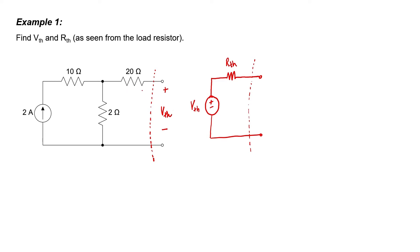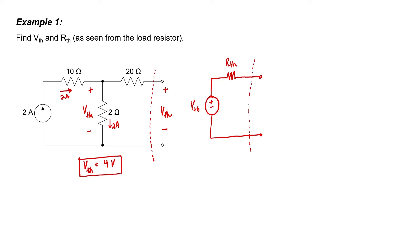When we're carrying out this measurement, there's no current flowing through the 20 ohm resistor. Therefore, the Thevenin equivalent voltage is just the voltage that shows up across the 2 ohm resistor. The entire 2 amps from the source flows through the 10 ohm resistor and then down through the 2 ohm resistor. Using Ohm's law, V equals IR, so 2 times 2 equals 4 volts.